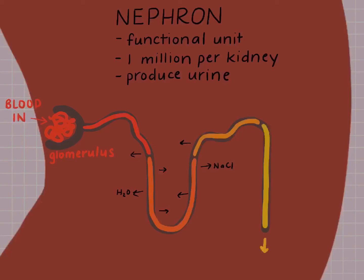So the fluid that you end up with has been stripped of the important things but contains the toxins — and that's when you form the actual urine, which is going to be secreted from the nephron, then ultimately to the ureters, to the bladder, and out of the body through the urethra.